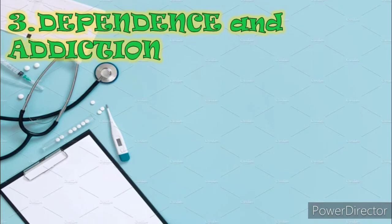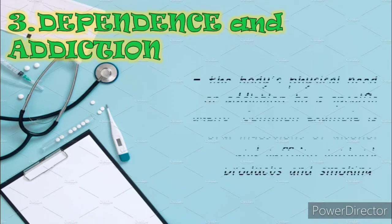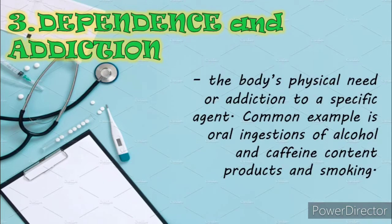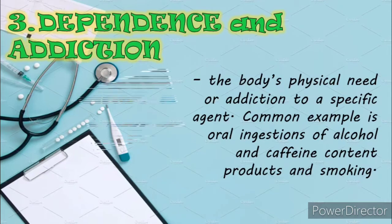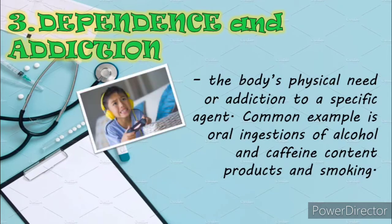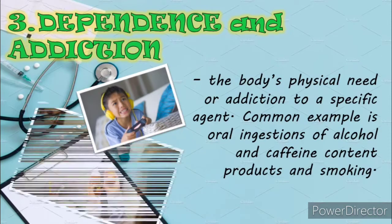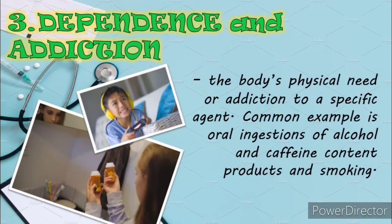Third, dependence and addiction. Drug dependence is the body's physical need, or addiction, to a specific agent. There is virtually no difference between dependency and addiction over the long term. This dependence results in physical harm, behavior problems, and association with people who also abuse drugs. Stopping the use of the drug can result in a specific withdrawal syndrome. Common examples include oral ingestion of alcohol and caffeine products, and inhalation or smoking of tobacco and cigarettes.